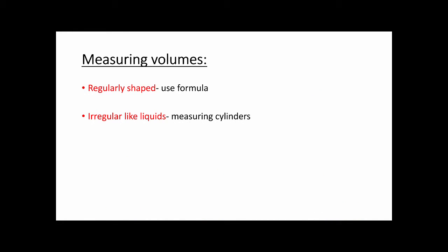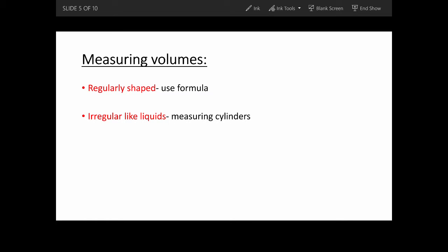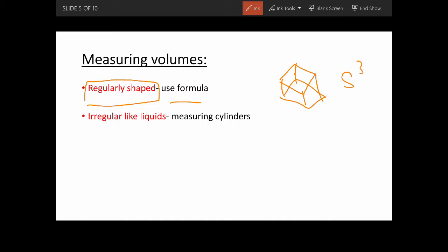For the next point, measuring volumes. If it's a regularly shaped object like a rectangular block, a dice, or a cube, you can use the formula s cubed. Or for a cylinder, you use pi r squared h. If it's regularly shaped, you use a formula.